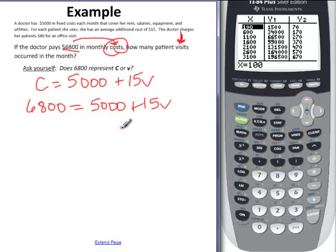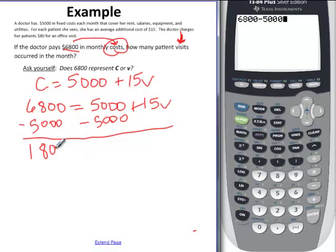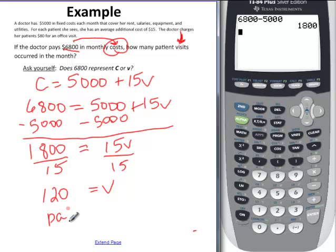So with linear equations, remember we want to take the constants and put them on one side. So we're going to subtract the $5,000 from both sides. And that will give us $1,800 is equal to $15V, and if we divide everything by 15, then we're going to find out that V is equal to 120, or 120 patient visits per month.